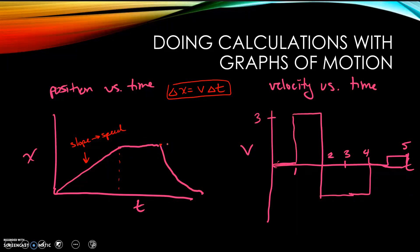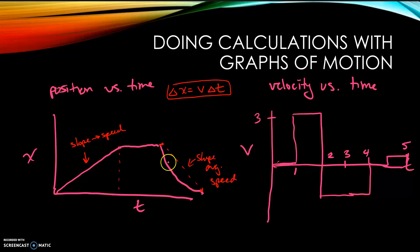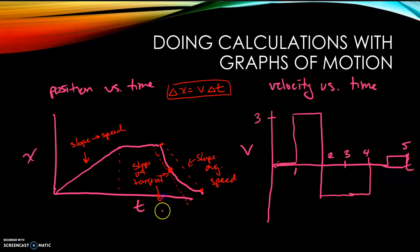If we have a curved line, we can find average speed by taking two points on the line — the slope between them gives the average speed. If I want the speed at a specific point, I draw a tangent line — a line that just barely touches the curve — and the slope of that tangent line gives me the instantaneous speed, which is sometimes also called the instantaneous velocity.